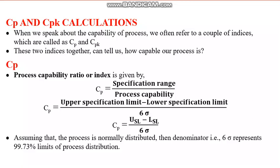CP is the specification range divided by the process capability. That means CP equals USL minus LSL divided by six sigma. The specification range is the upper specification limit minus the lower specification limit, and assuming a normally distributed process, the denominator is six sigma.